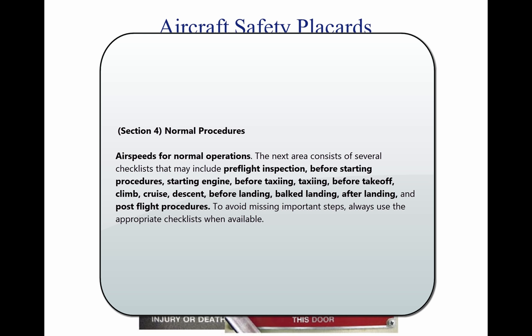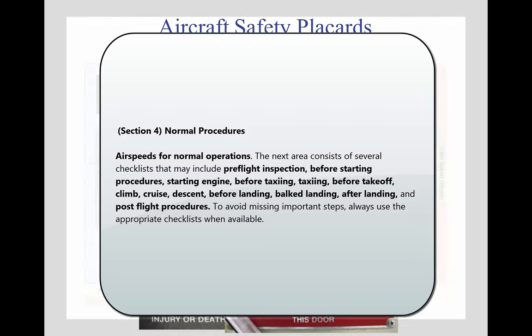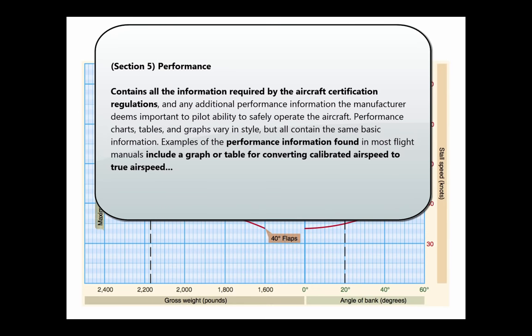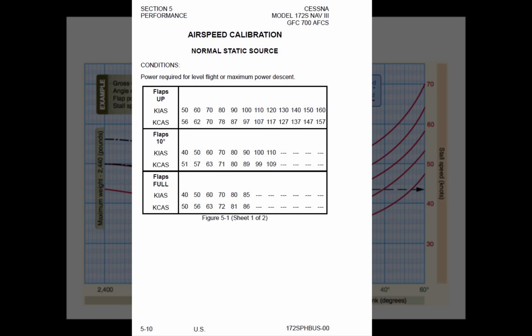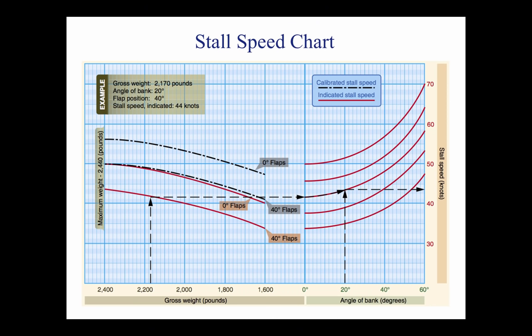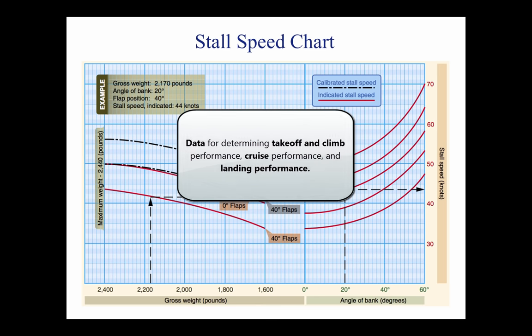Section 5: The Performance section contains all the information required by the Aircraft Certification Regulations and any additional performance information the manufacturer deems important to pilot ability to safely operate the aircraft. Performance charts, tables, and graphs vary in style, but all contain the same basic information. Examples include a graph or table for converting calibrated airspeed to true airspeed, stall speeds in various configurations, and data for determining takeoff and climb performance, cruise performance, and landing performance.